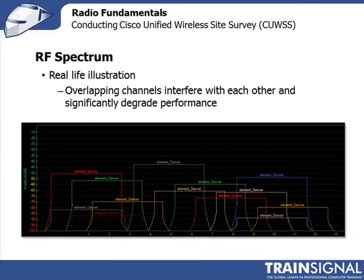Here's a classic case where people deployed lots of access points on lots of different channels thinking it was the right thing to do, but in fact they deployed more access points than they needed — making the deployment cost much higher than necessary — and the actual performance was worse because of overlapping channels. If they'd just done a site survey and worked out how many access points they needed, then deployed on non-overlapping channels — in this case channels 1, 6, and 11 — the result would have been far better.